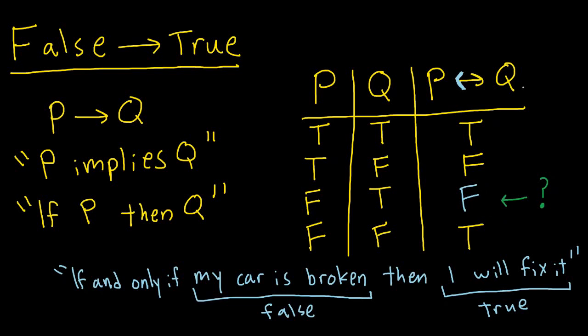That's one issue people have with this — the English language issue where 'if then' really means 'if and only if.' But there's actually a much deeper issue: how could something false imply something true? I was confused about this for an embarrassingly long time. What I usually do when confused is ask my friends. I talked to three very smart friends — Theo, Naomi, and Ben — and asked them how they think about false implies true. In this video I'll present all three answers and get different perspectives.